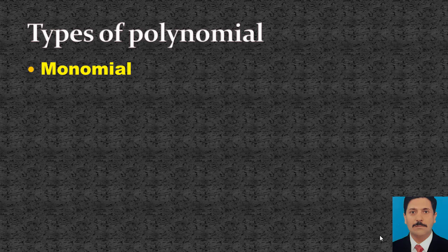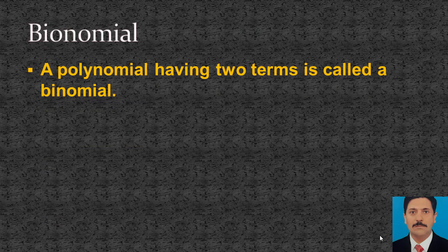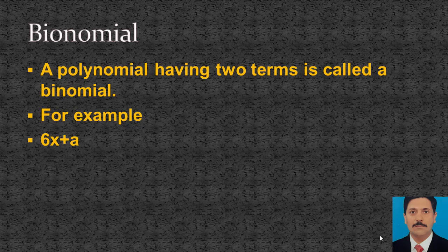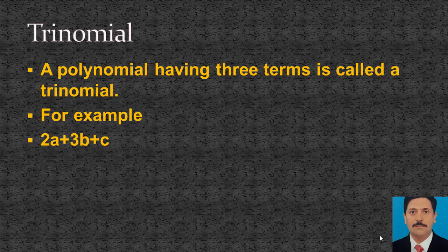Now we discuss the types of polynomials. The first type is monomial: a polynomial having one term is called a monomial. For example, 5 and 3x. Binomial: a polynomial having two terms is called a binomial. For example, 6x plus a — this contains two terms, 6x and a. Also, a minus 3b is a binomial. Trinomial: a polynomial having three terms is called a trinomial. For example, 2a plus 3b plus c is a trinomial.